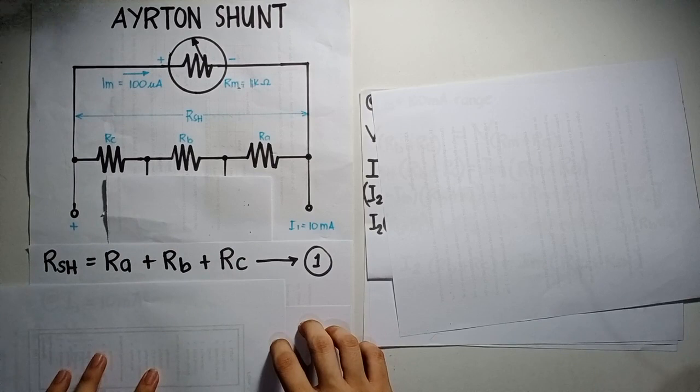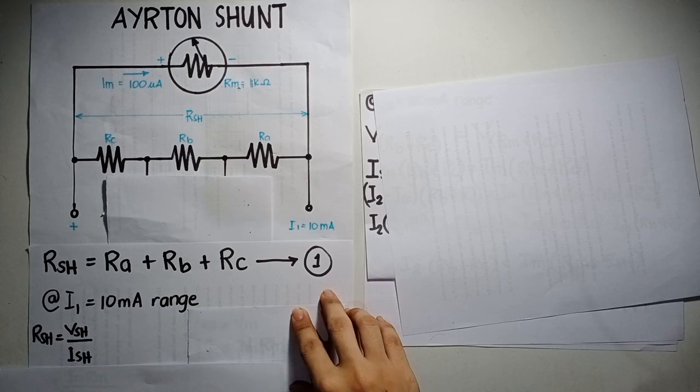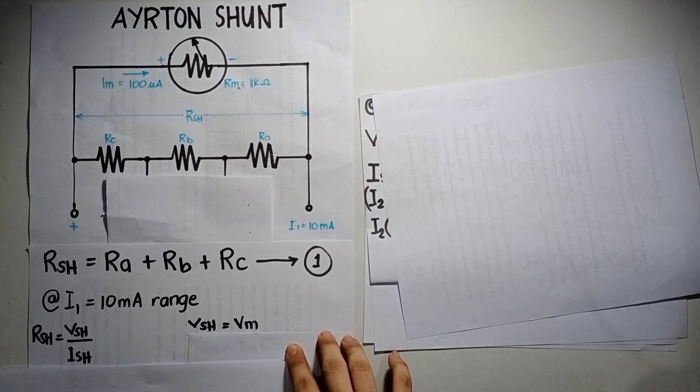Now, we will get the value of RSH at 10 mA range. RSH is equal to VSH over ISH. Since we already know that VSH is equal to Vm, we will use the equation of Vm to substitute VSH.